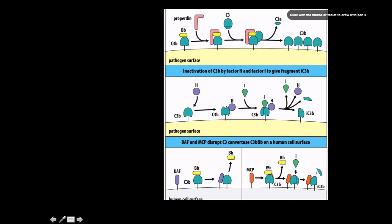And then membrane cofactor protein binding to basically the alternative C3 convertase, which is going to result in a conformational change, again, allowing factor I to come in and to cleave this molecule into IC3 beta.